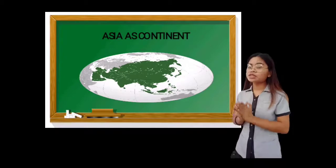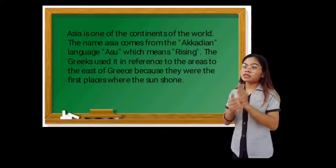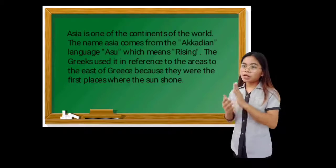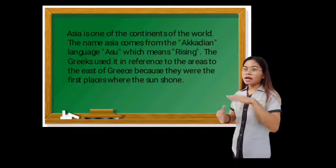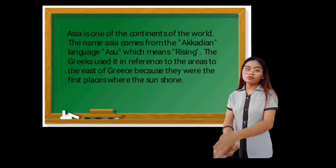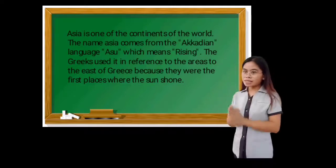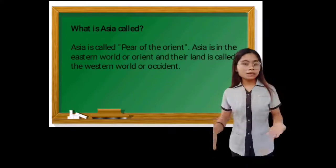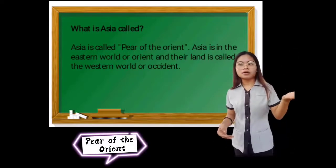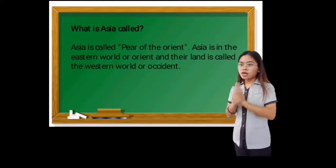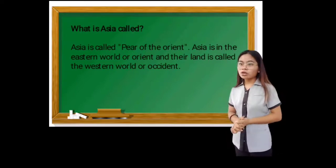I know very well that you are ready for our next lesson. Which do you think is the largest of the seven continents? Asia is one of the continents of the world. The name Asia comes from the Akkadian language, which means rising. The Greeks used it in reference to the areas to the east of Greece because they were the first places where the sun shone. Asia is called the eastern world or orient, and their land is called the western world or occident.